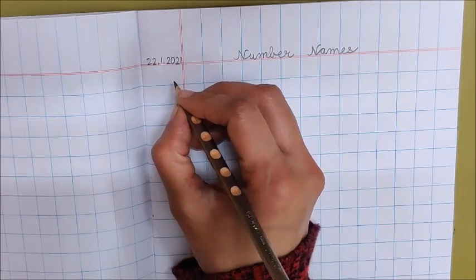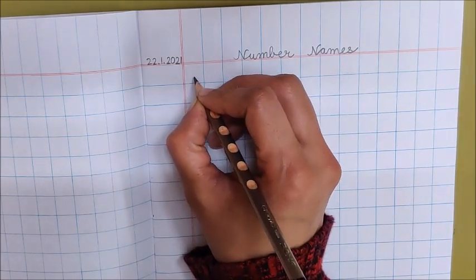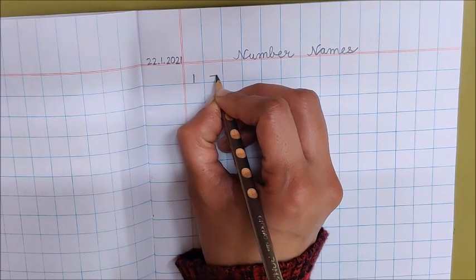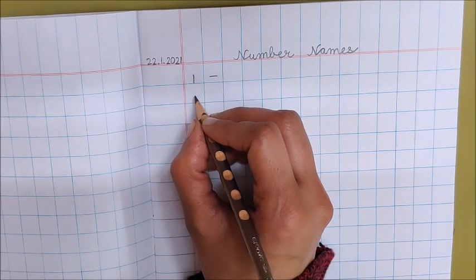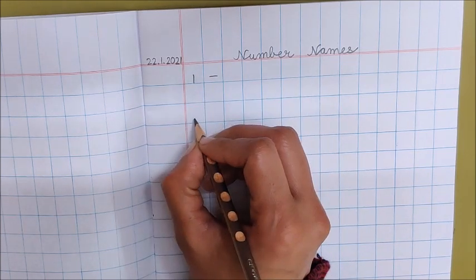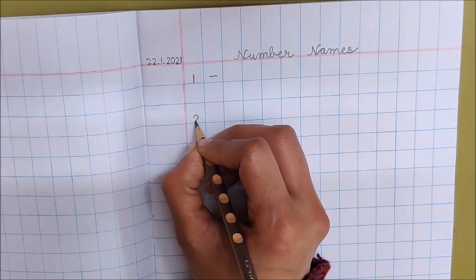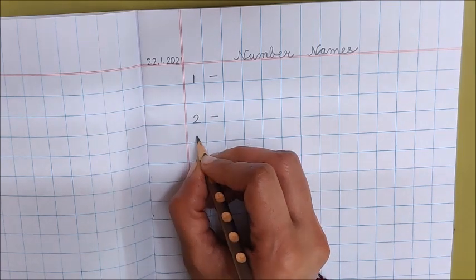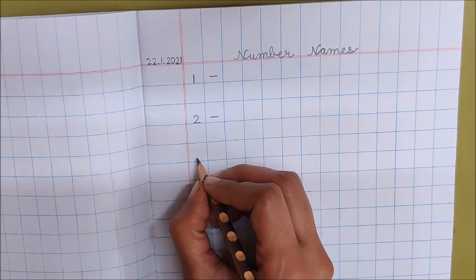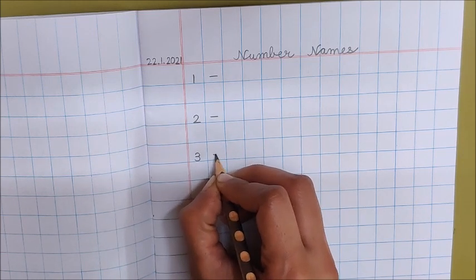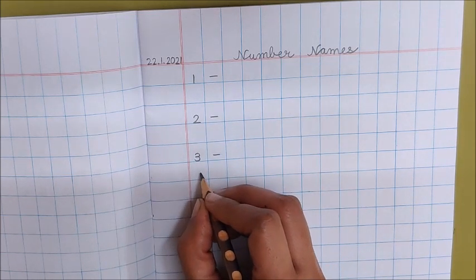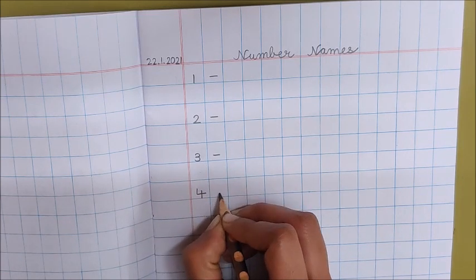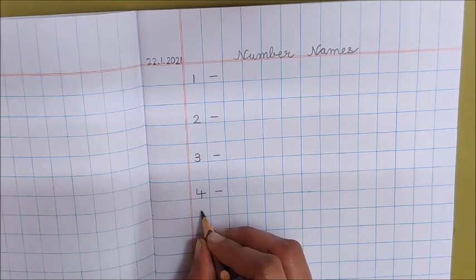Now children, in the first box write down 'one'. In the next box put a dash, then leave one box and write down 'two'. Dash, leave one box. What comes after two? Three. Dash, leave one box. Four. Dash, leave one box.